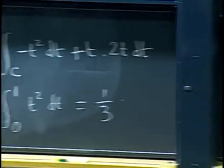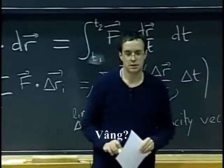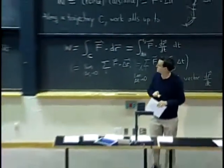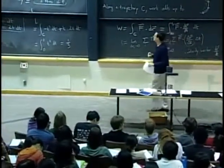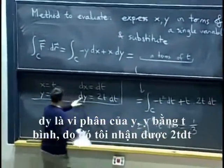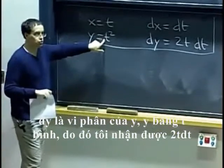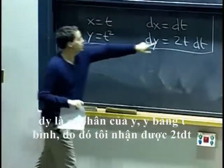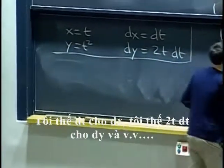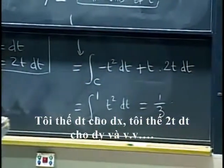Any questions? Yes? When you derive dy, don't you derive...? No, when you do dy. So what is dy? dy is the derivative of y. It is the differential of y. y is t squared, so I get 2t dt. So I plug dt for dx, I plug 2t dt for dy, and so on.